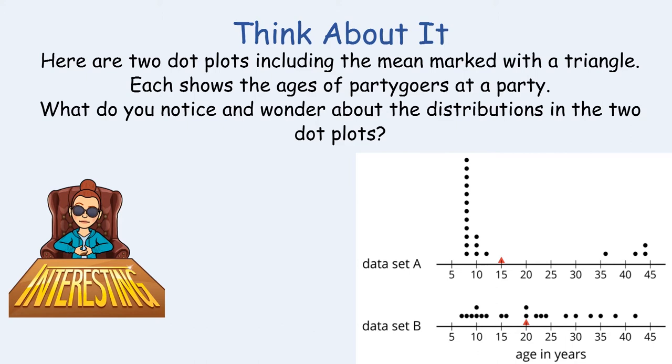Okay, our last think about it for this week's lesson. On your screen are two data plots and the red triangle indicates the mean. Each data plot shows the ages of party goers at a party. So the question is what do you notice and wonder about the distributions and the two dot plots? I'll give you a moment to think about that.